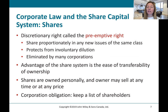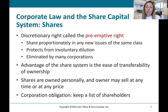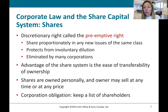There is a fourth right called a preemptive right. This enables shareholders to participate in any further issuances of shares in their class before they're issued in the public market, protecting the shareholder from involuntary dilution of their interest. They can decide to purchase more shares or not. However, because it's inconvenient for companies to consult existing shareholders anytime they want to issue more shares, this right has been eliminated by many corporations.